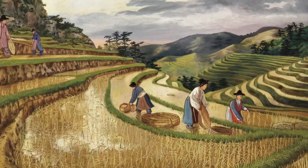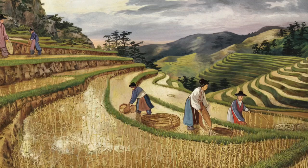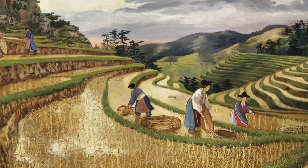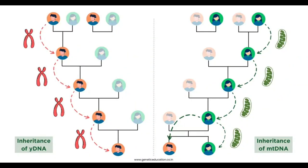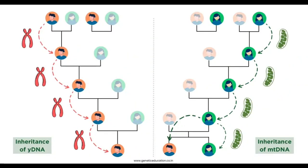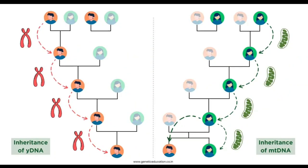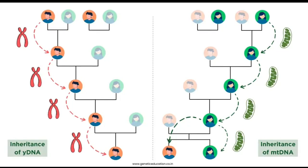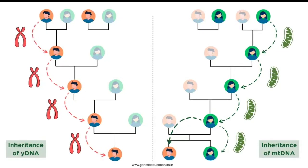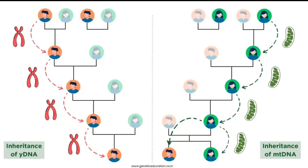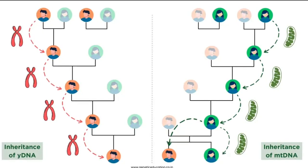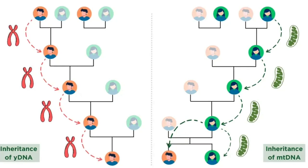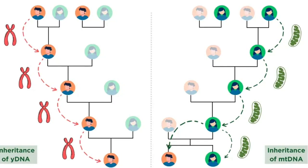To better understand the genetic origins of Korea and other East Asian populations, scientists have turned to advanced genetic analysis techniques, focusing on both mitochondrial DNA and Y-chromosome markers. These genetic tools allow researchers to trace ancestry along both the maternal and paternal lines, providing a more detailed picture of how populations moved and intermingled over time.